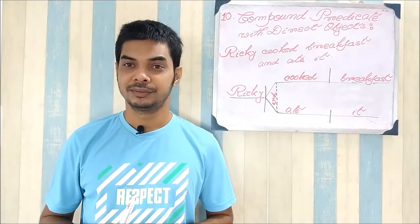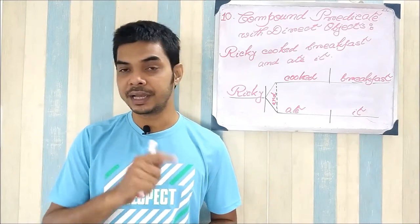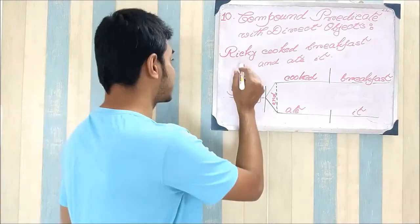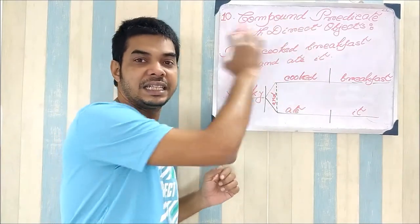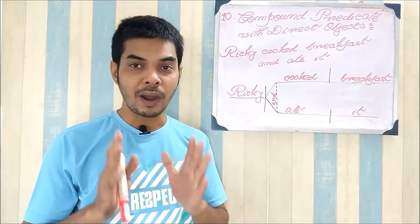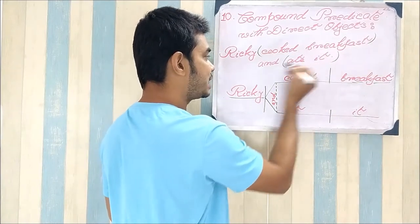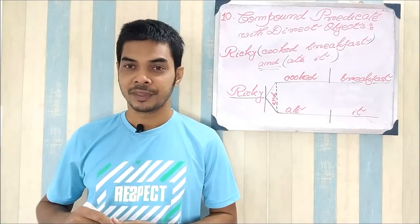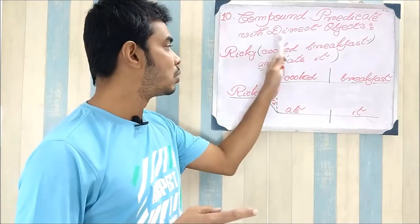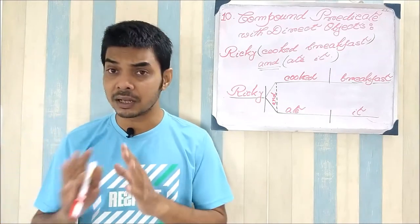Now it will be a compound predicate with direct objects — Rule 10. A predicate can also be compound; it's not that every time you would get only a compound subject or compound object. Read the sentence: 'Ricky cooked breakfast and ate it.' You'd find we have two different predicates — 'cooked breakfast' and 'ate it' — joined with 'and,' a conjunction. So this is a compound predicate with direct objects: cooked what? Breakfast. Ate what? It. That's the logic behind the sentence.